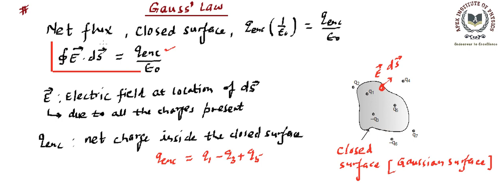This is the statement of Gauss and here is the meaning of the terms involved. Gauss's Law is always true, and we will use it for two purposes: one is to find out the flux through a closed surface or any part of it, and the other is to find out the electric field due to symmetrical charge distributions.